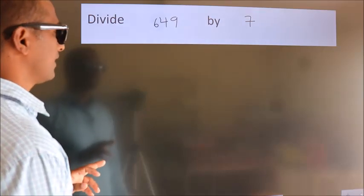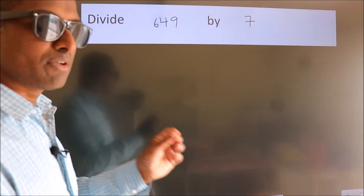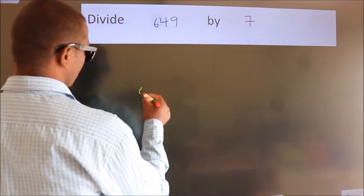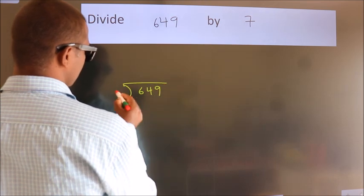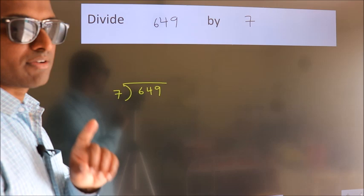Divide 649 by 7. To do this division, we should frame it in this way. 649 here, 7 here. This is your step 1.